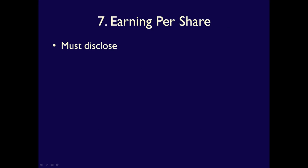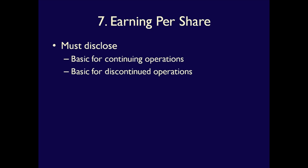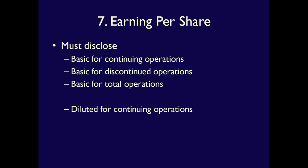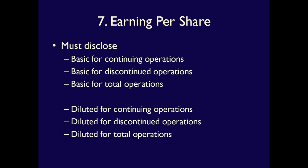Item seven is earnings per share. We'll have a separate video on how to calculate it, but on the face of the statements there must be basic earnings per share from continuing operations and discontinued operations, plus a total EPS for both together. In addition, there must be diluted earnings per share from continuing operations, diluted EPS from discontinued operations, and diluted EPS from both operations together. Earnings per share is considered a very important ratio for assessing a business's performance.